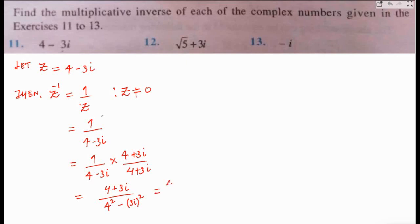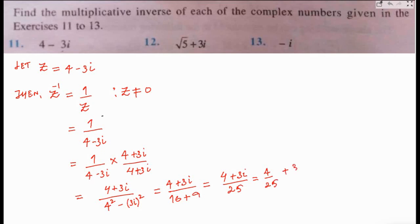This equals (4 plus 3i) upon (16 plus 9), since iota squared equals negative 1, so negative 3i squared becomes positive 9. We get (4 plus 3i) upon 25. So we can write this as 4/25 plus 3/25 i.